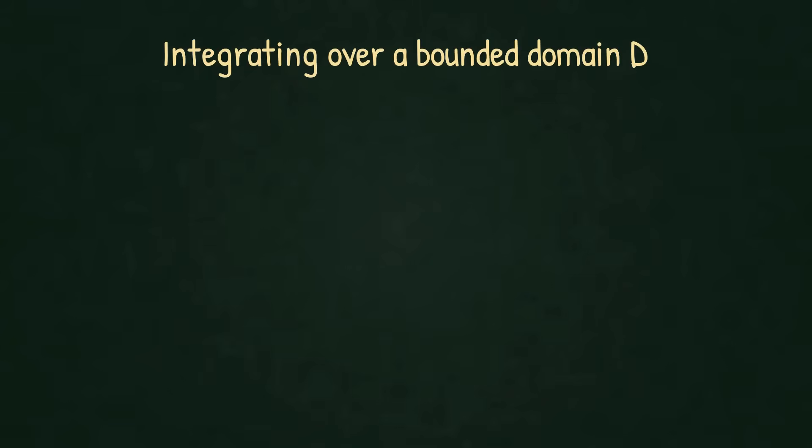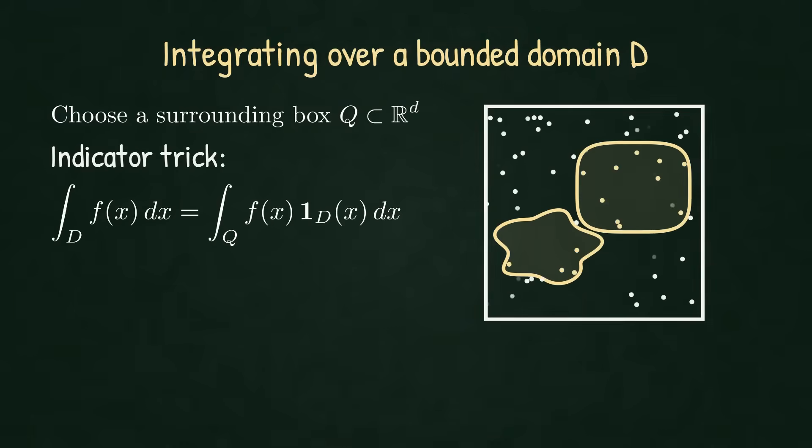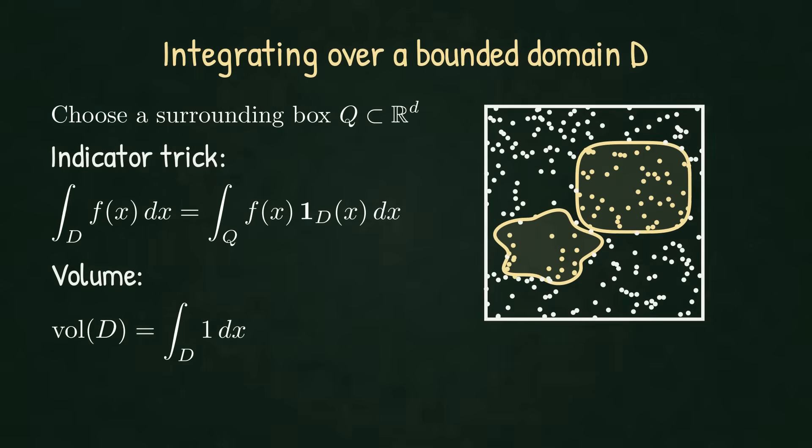We're now ready to integrate on an arbitrary bounded domain D. The move is simple. Place D inside a box Q and then use the indicator trick. So we evaluate F on a whole box, but the only points inside D contribute. This also fixes the notion of volume for D. It's just the integral with the constant function with respect to this bounded domain D.